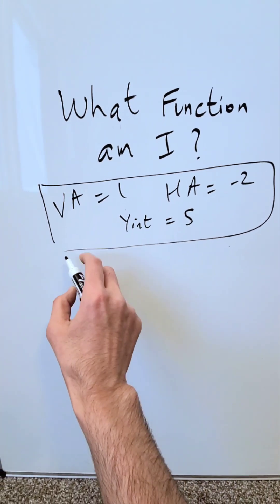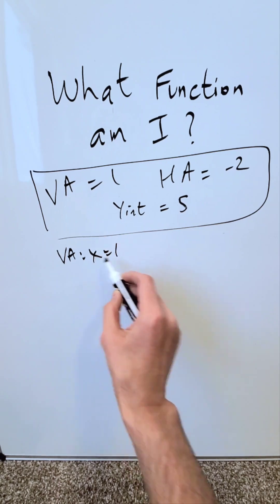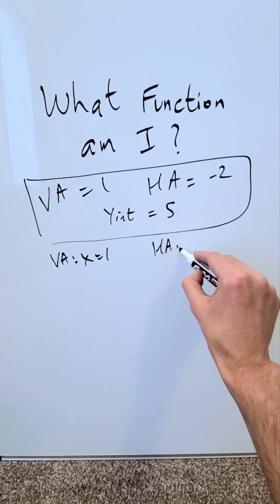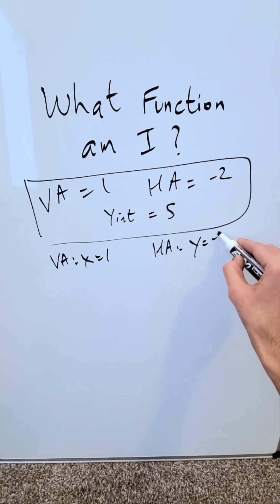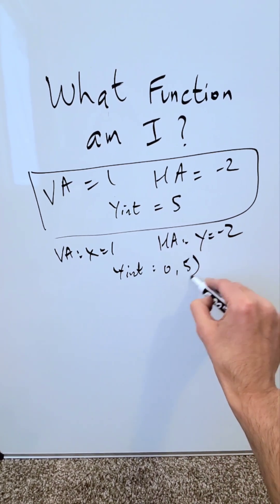When you have a vertical asymptote, your representation is what? It's x equals 1. Vertical asymptote. Horizontal asymptote is always in the horizontal form, y is equal to minus 2. Your y-intercept will be represented best as 0 comma 5.